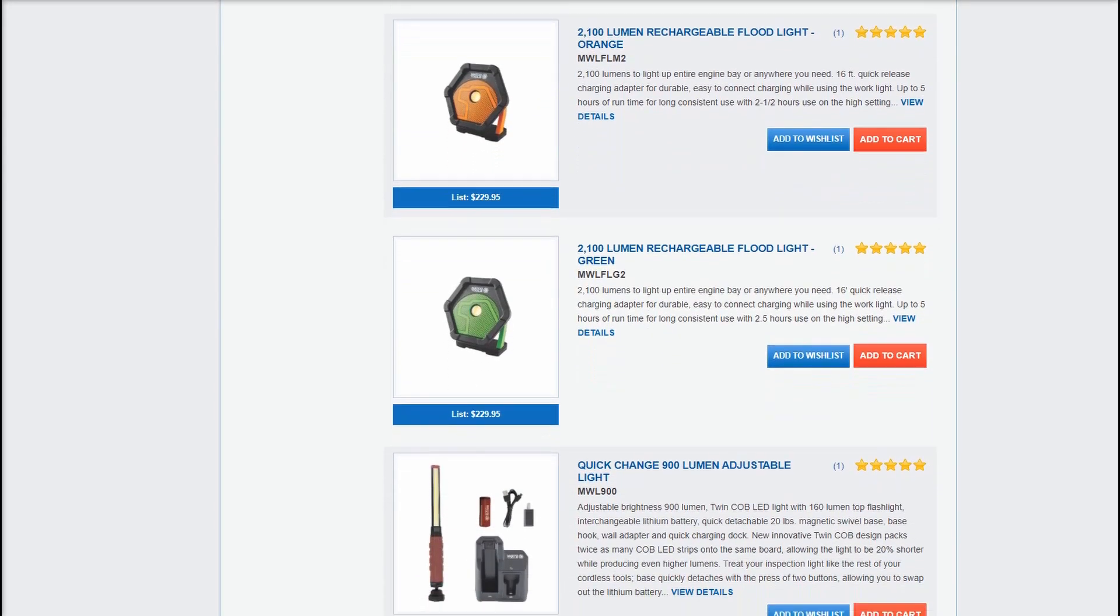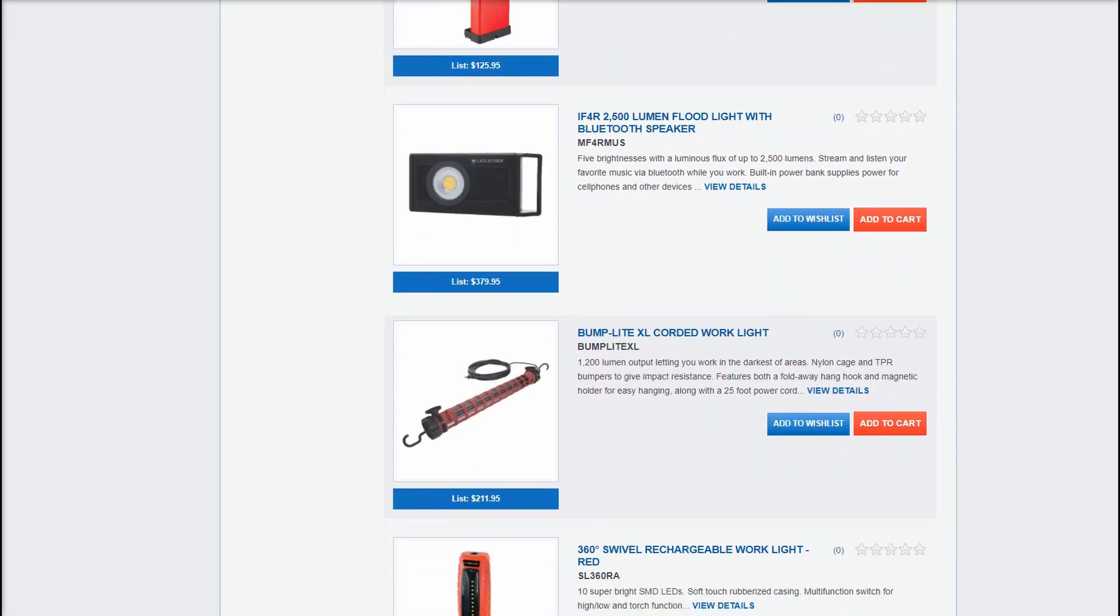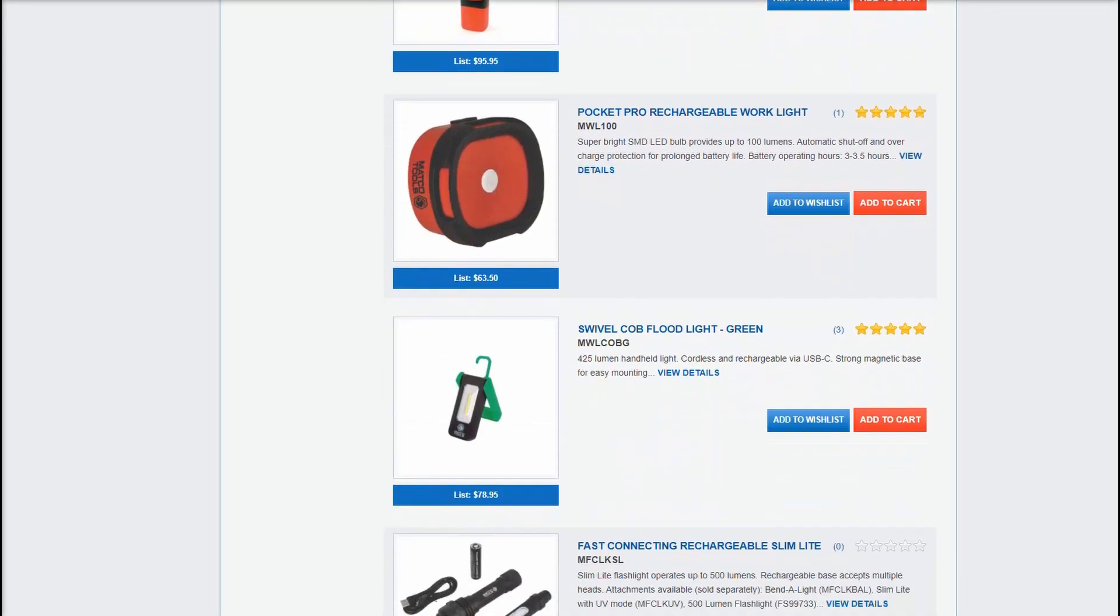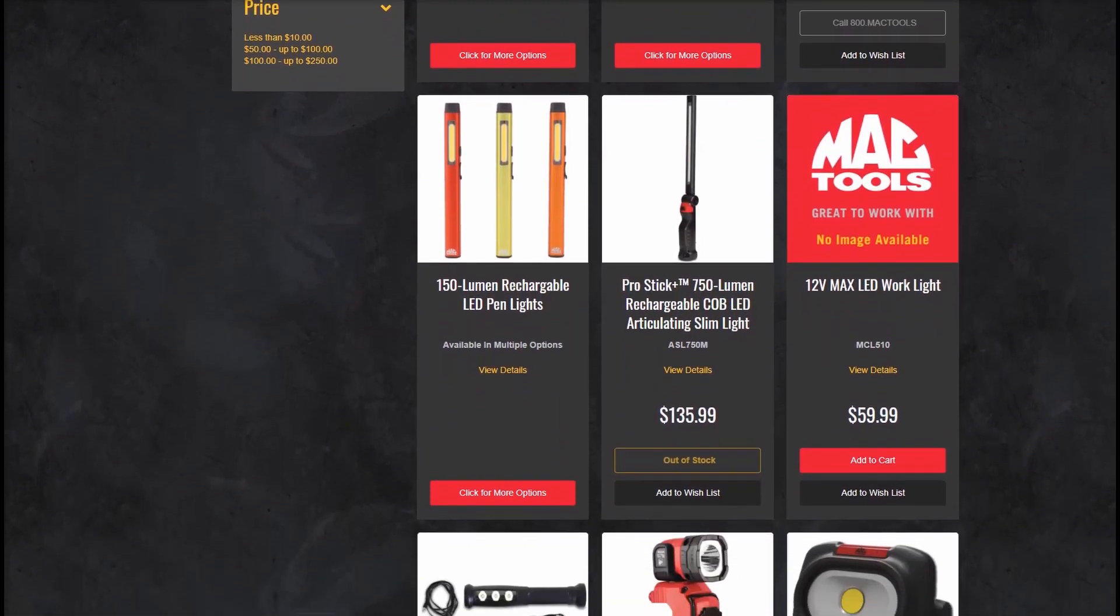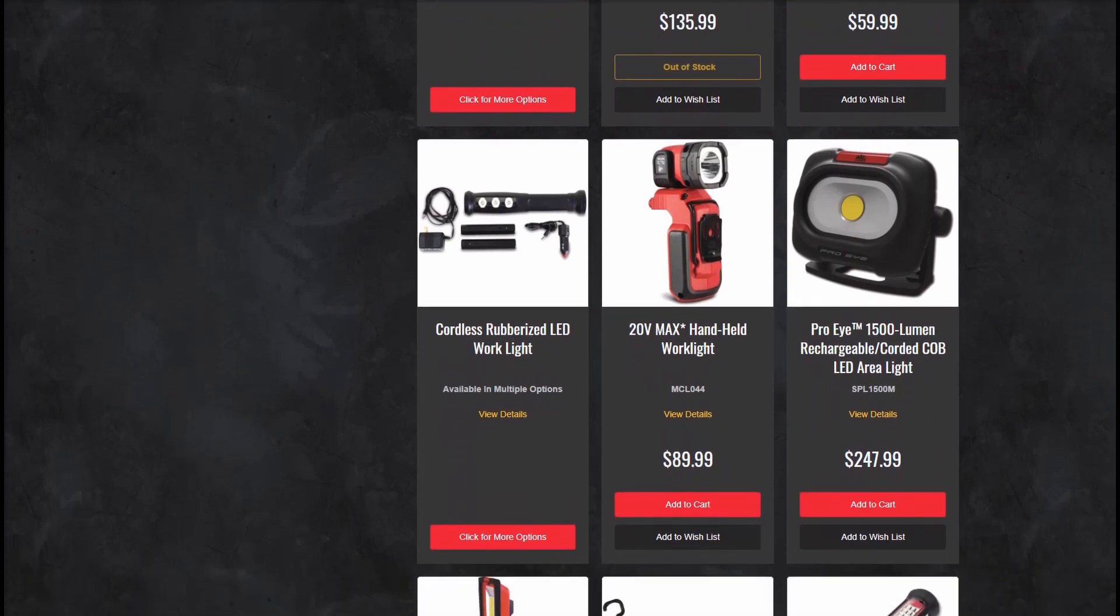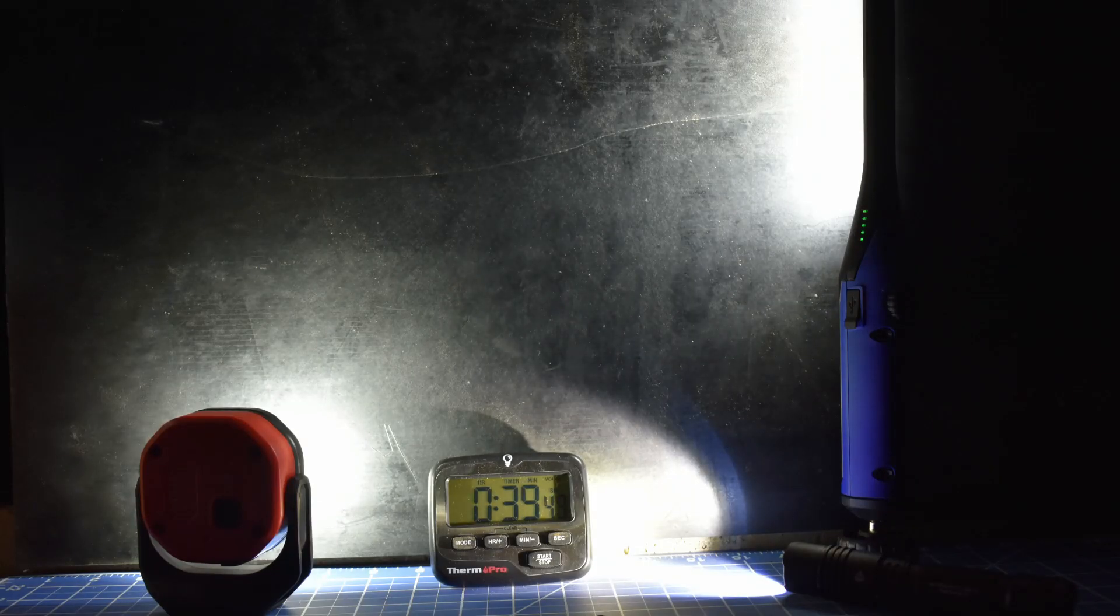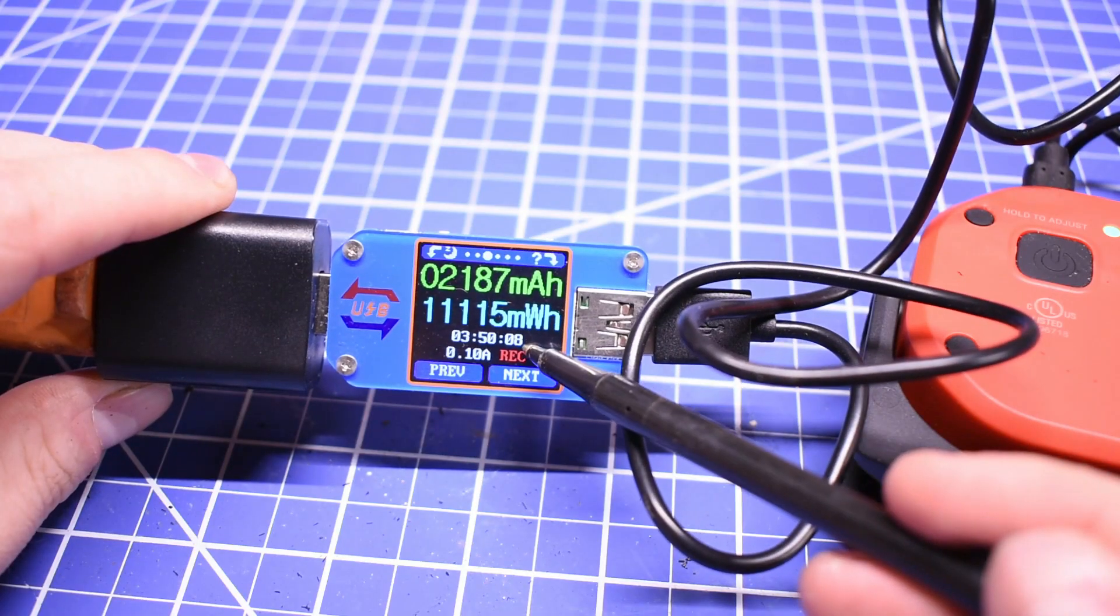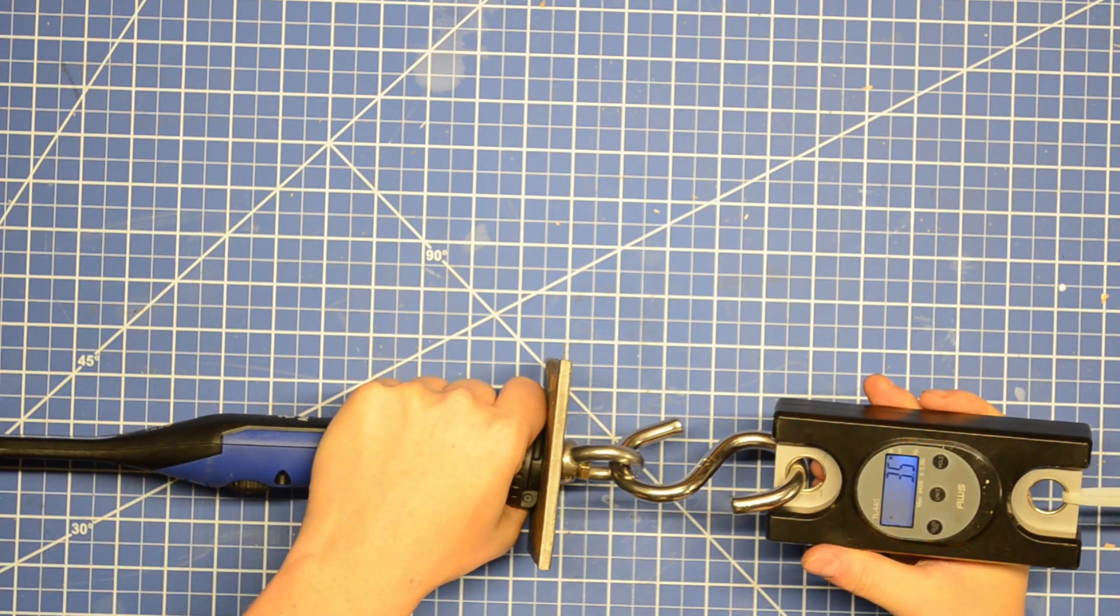On this series we're going to test inspection lights, flashlights, small floodlights, really anything you guys suggest that will work on this rig from professional to DIY brands to see what's what. We're going to measure their lumen output but we're also going to test practical things like runtime, charge time, magnet strength.